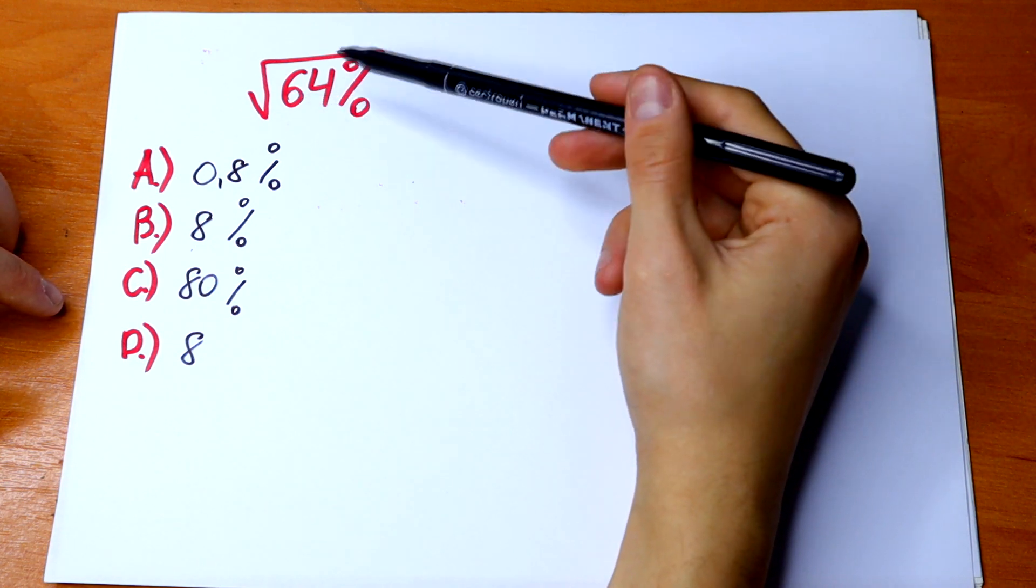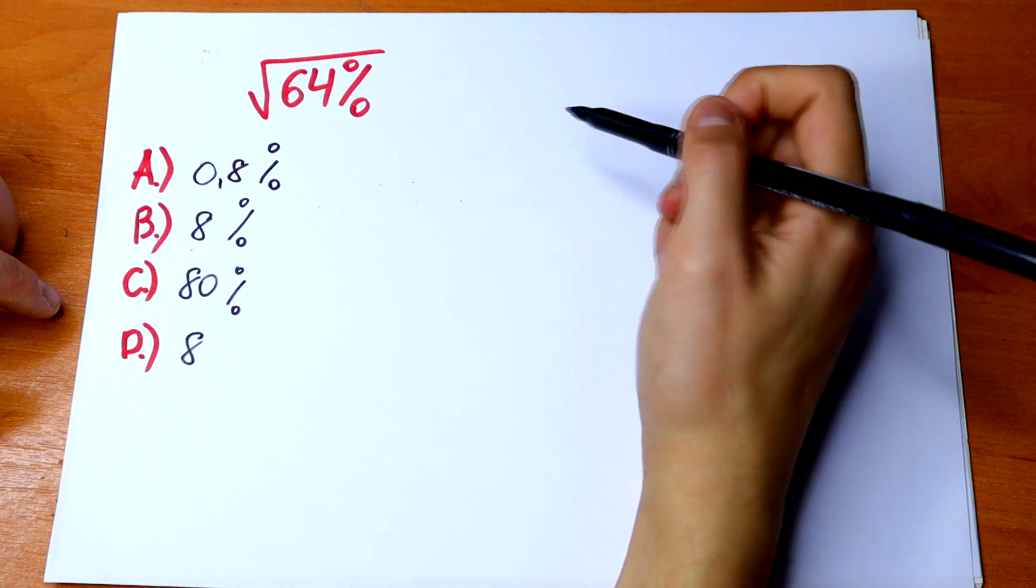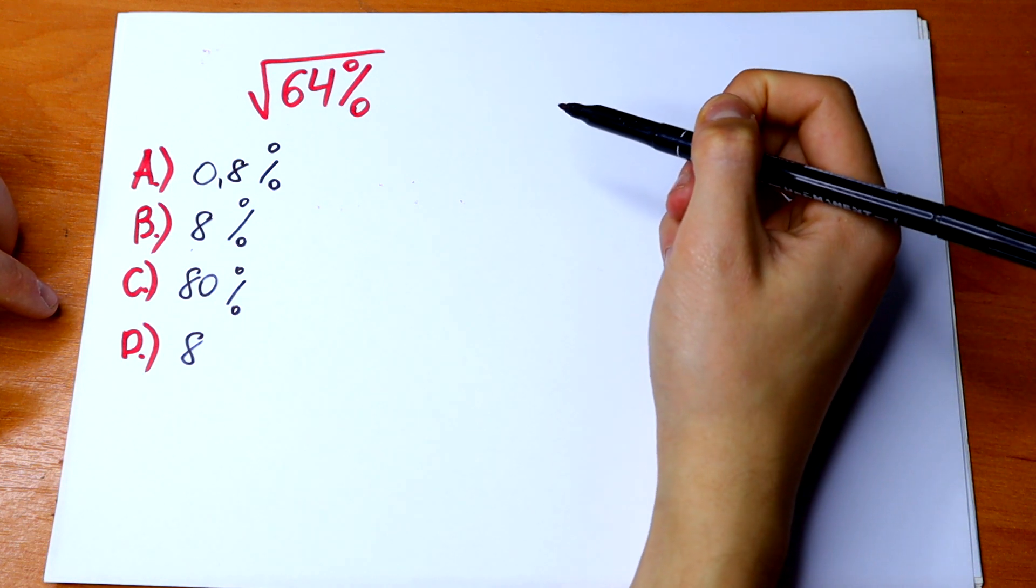What would be equal to square root of 64 percent? So how can we calculate this?